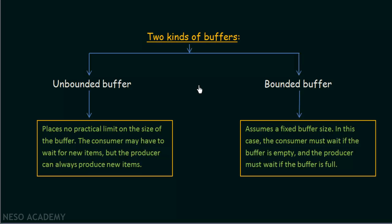We are discussing all this because it is an example of shared memory systems and inter-process communication. We discussed about shared memory systems and how they work, using the producer-consumer problem as an example, and saw the two kinds of buffers available. With this, I hope the concept of shared memory systems is clear. Thank you for watching and see you in the next one.